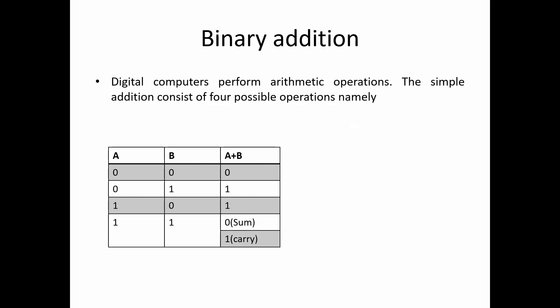First we will see binary addition. If there are two bits A and B, there are four combinations: 00, 01, 10, and 11. When we add these two bits: 0 plus 0 is 0, 0 plus 1 is 1, 1 plus 0 is 1. In binary addition, 1 plus 1 produces a sum as well as a carry. Sum is 0 and carry is 1.